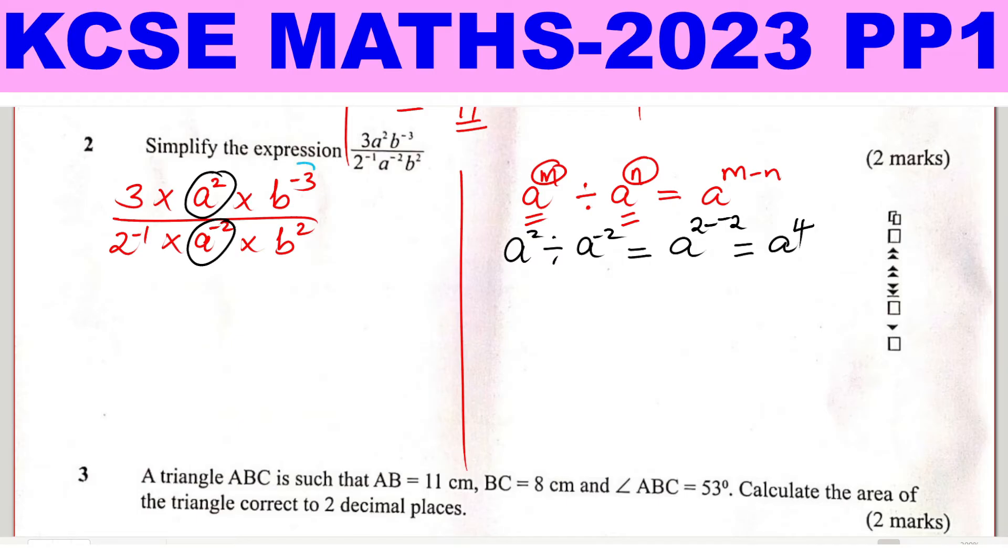The next one is b. So we have b raised for negative 3 divided by b squared. Again, we subtract the powers. The bases are the same. So this will be negative 3 minus 2. And this will be b raised for negative 5.